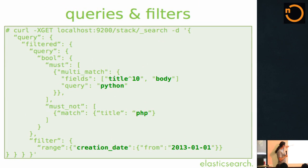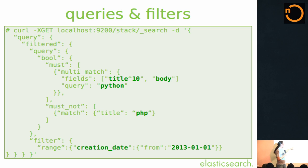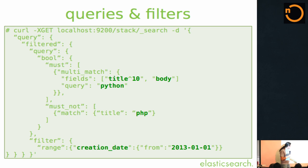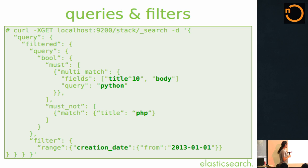How you actually query the data is through a query DSL built on top of JSON. This is what a typical query looks like: it's a filtered query that has a query part and a filter part. The query is a bool query with a must part — so in title or body there must be Python — and a must not part — in title there must not be PHP. Then we are filtering events from this year. Filters are fast, cacheable, and don't contribute to the score; they just limit your result set.